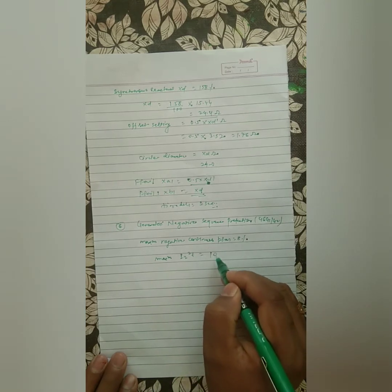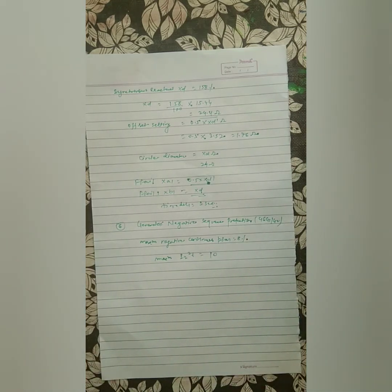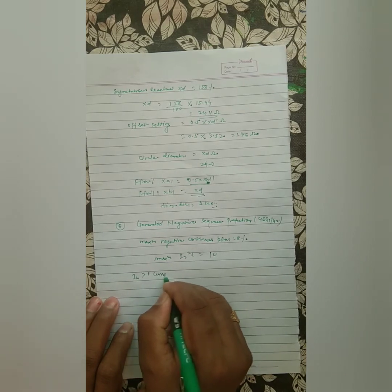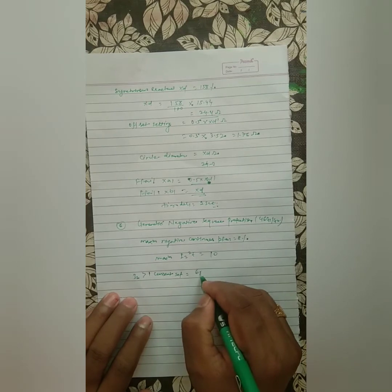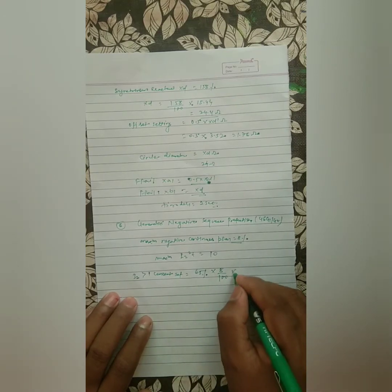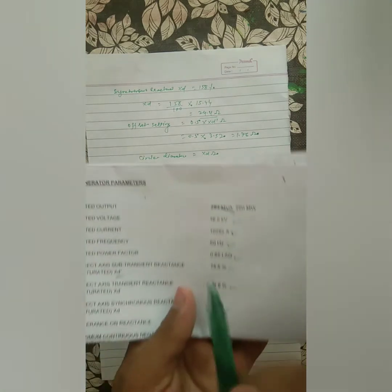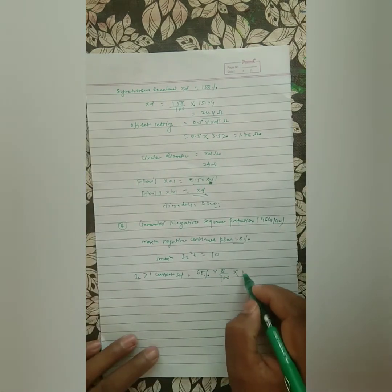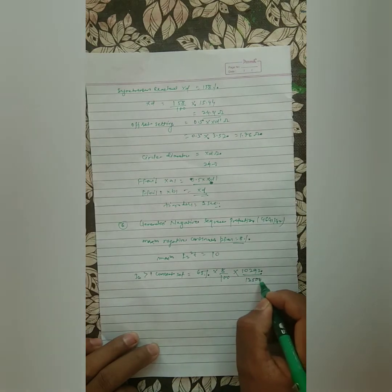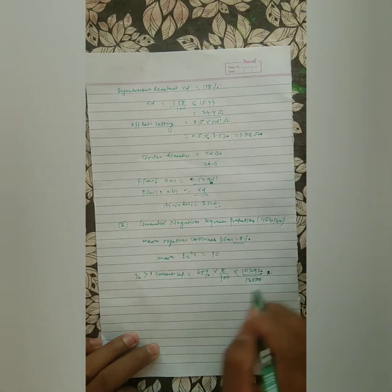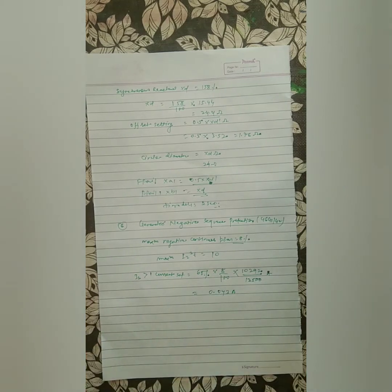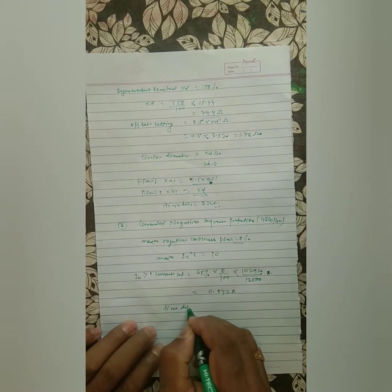The maximum continuous negative sequence current I2 is 8%. For the current setting I2>1, we normally take 65% of 8% = 0.052 per unit. The full load current of the generator is 10,292 A, and with CT primary of 12,500 A and secondary of 5 A, the referred current is 0.043 A. The time delay is 2 seconds.